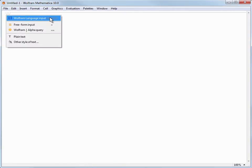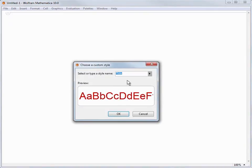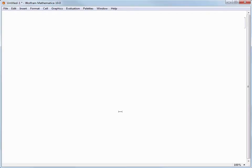Mathematica notebooks can contain a variety of different types of input, but for now, let's choose Other Style of Text, and then select Title from the drop-down menu and press OK. Now we have a big blinking vertical cursor in our document, and we can type hands-on start to Mathematica.